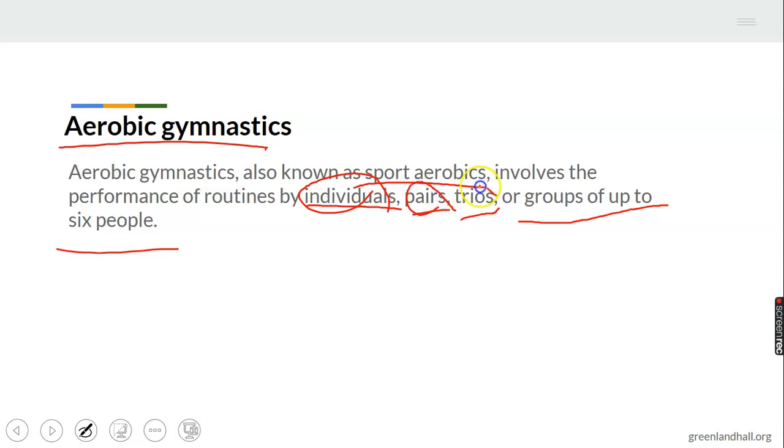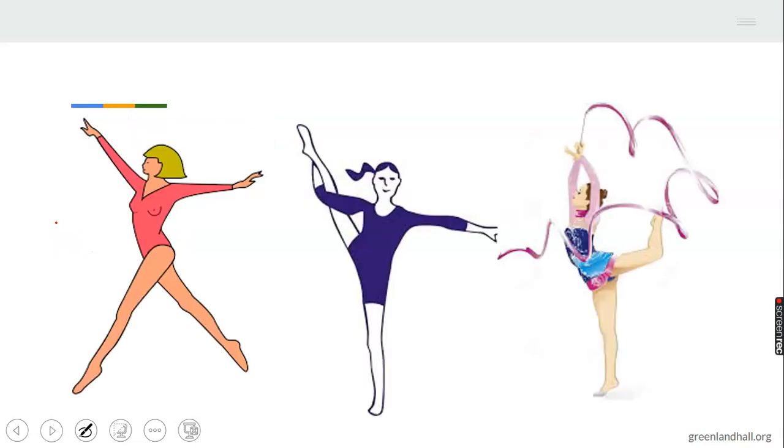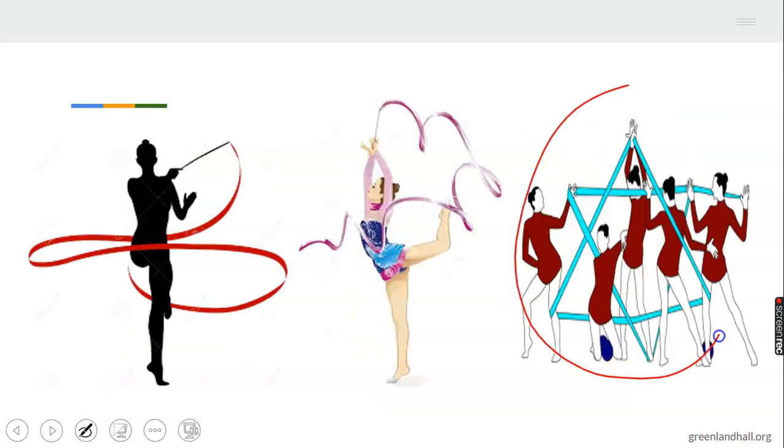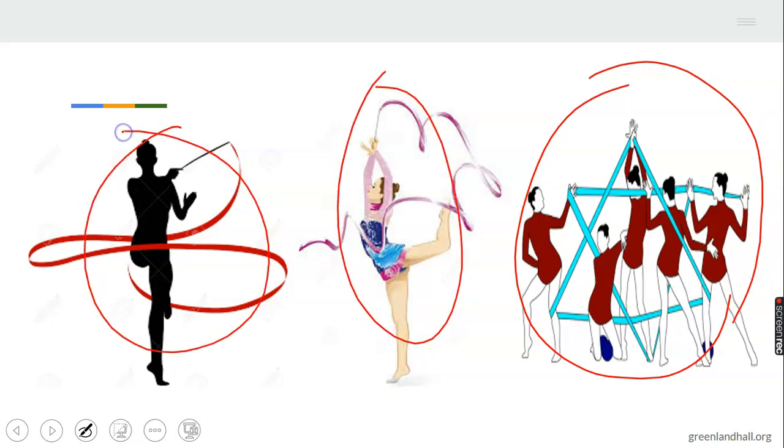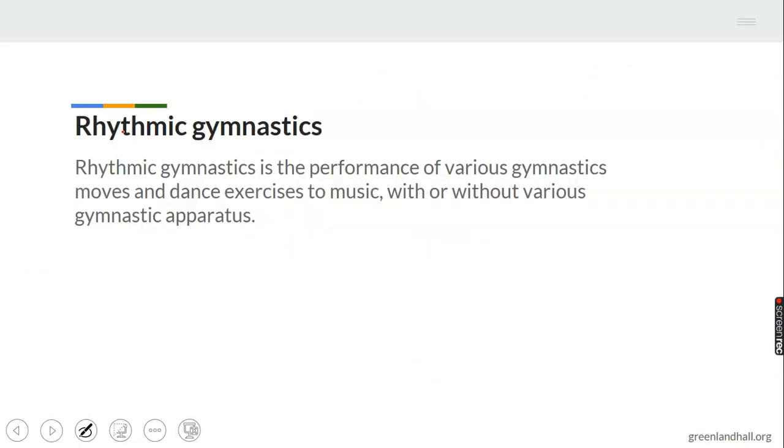It can be one person, two, three, or six people. That's what it means: one person can do it or a group of persons can do it. This is an example of aerobic where they have to dance and go flexible. Here we have a group of people doing it, can you see it? These are individuals doing aerobic.